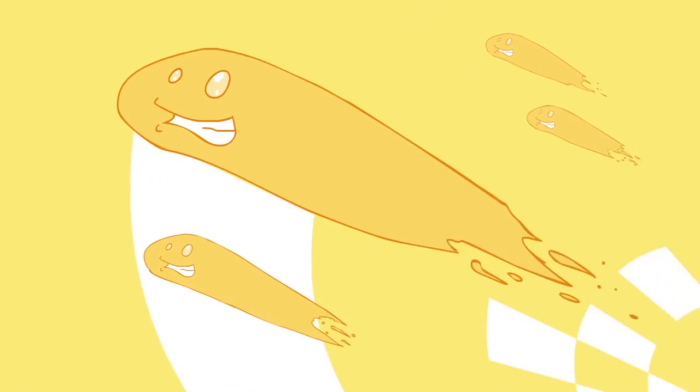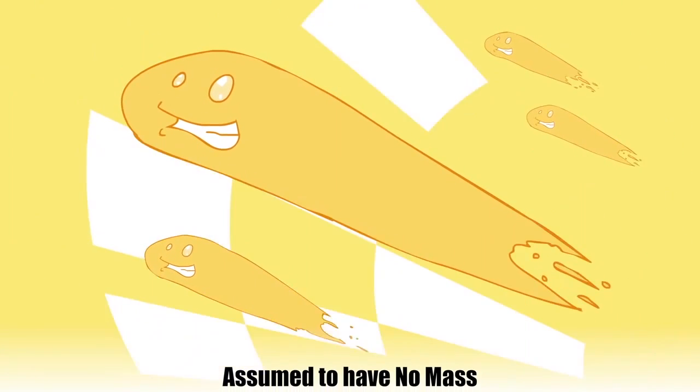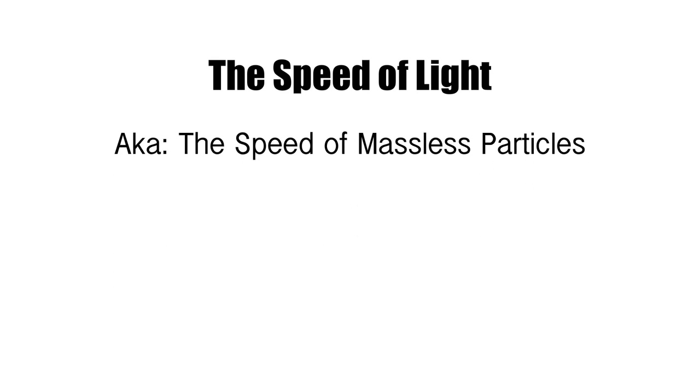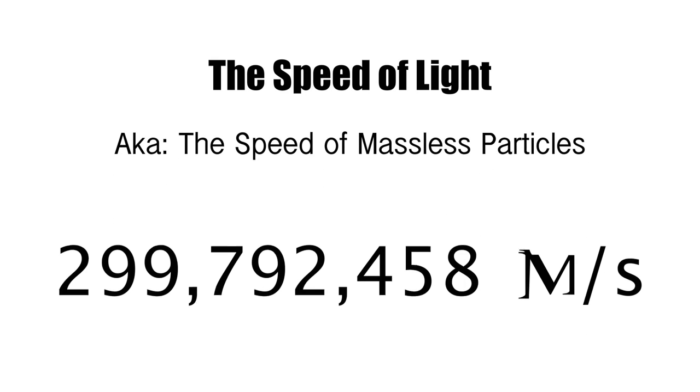Light and other particles that move at the speed of light are assumed to have no mass. The speed of light, also known as the speed of massless particles, is about 299,792,458 meters per second. No, exactly. That's actually how the meter is defined.